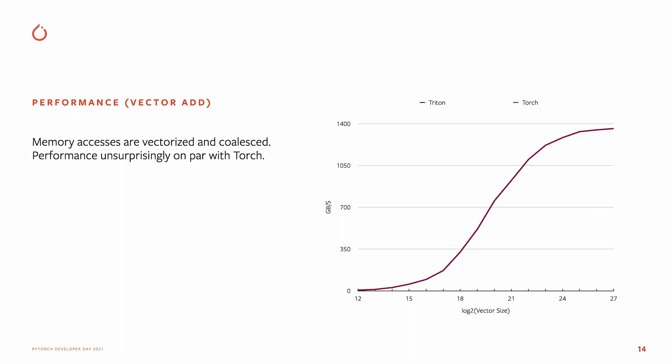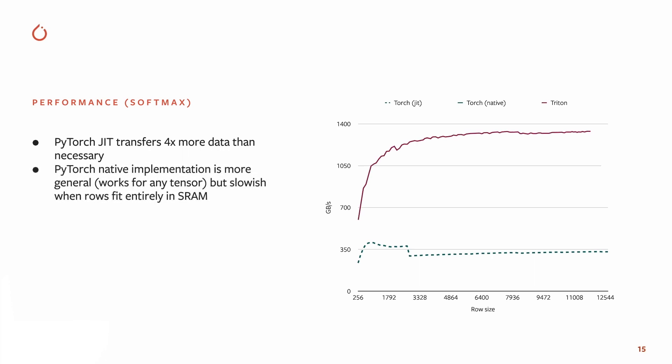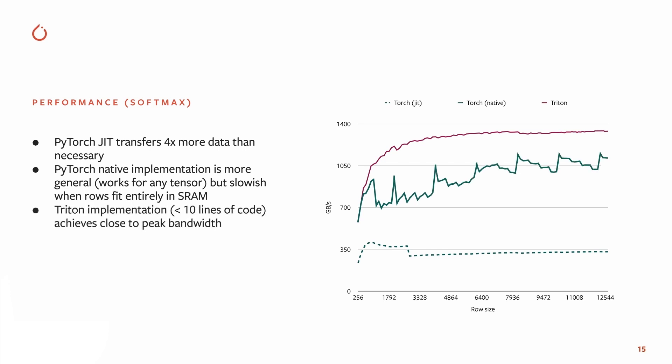You might wonder how well Triton performs. The simple vector addition works just as well as PyTorch, because memory accesses in Triton are vectorized and coalesced by the optimizing compiler, so performance is on par with PyTorch for elementwise operations. For softmax, it's a more challenging application. PyTorch JIT transfers about four times more data than necessary, making it about four times slower than it should be. The native PyTorch implementation is slightly better, but on an A100 GPU with about 1500 GB/s of advertised bandwidth, it only reaches about 75% of it. The Triton implementation, in contrast, fits in only 10 lines of Triton code and achieves close to peak GPU performance.